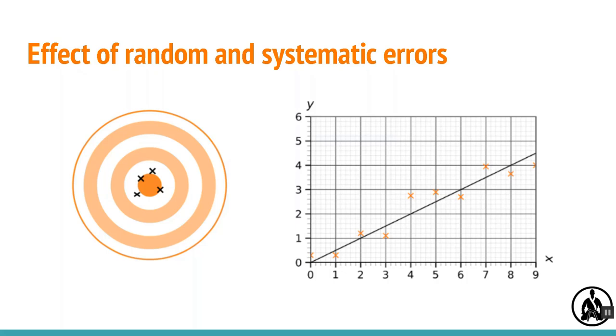The equivalent on a graph is drawing a line of best fit, as this averages the positions of the points, again increasing the accuracy of values calculated using the points on the trend line.